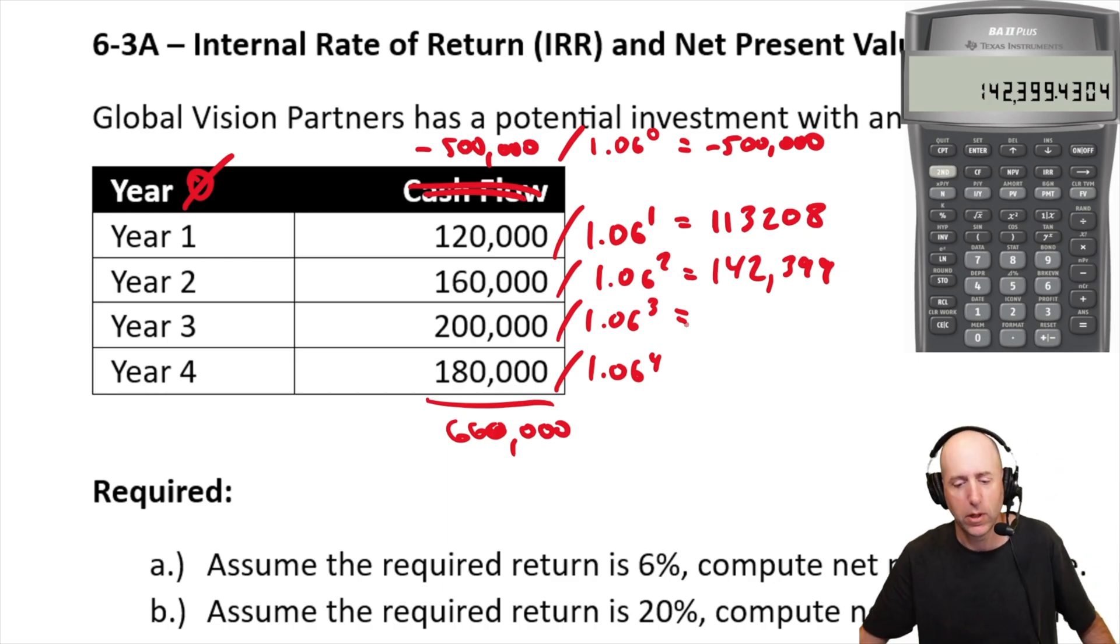200 divided by 1.06 cubed, 1 over x times 200, 167,924.